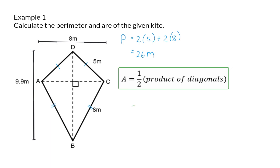For the area, we need to determine half of the product of the diagonals. And in our kite, the one diagonal AC is given as 8 meters, and the other diagonal is given as 9.9. So, the area of this kite is 39.6 meters squared.